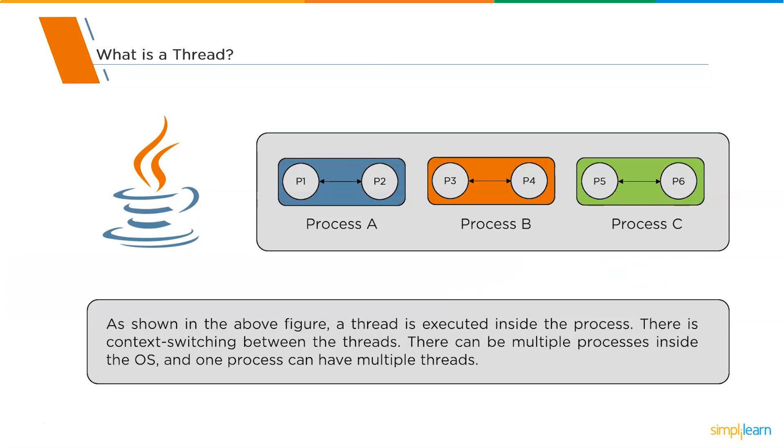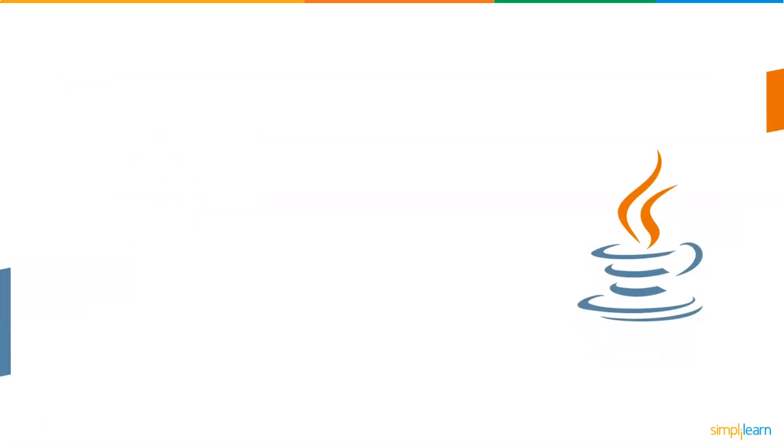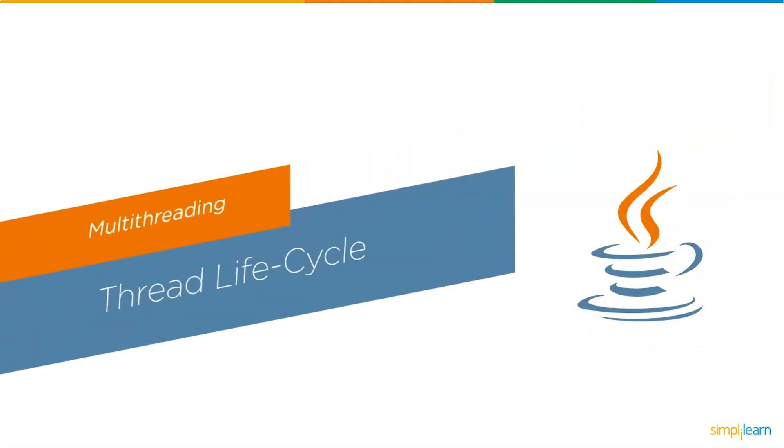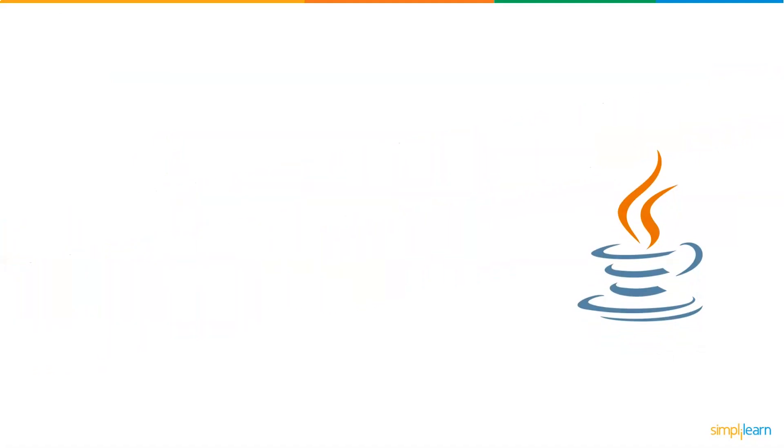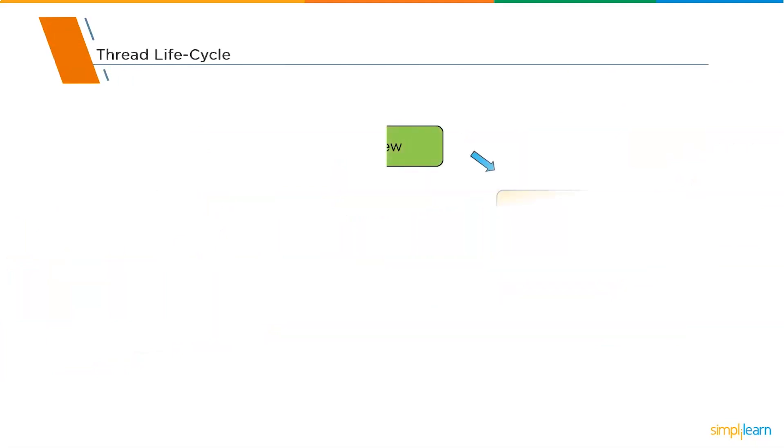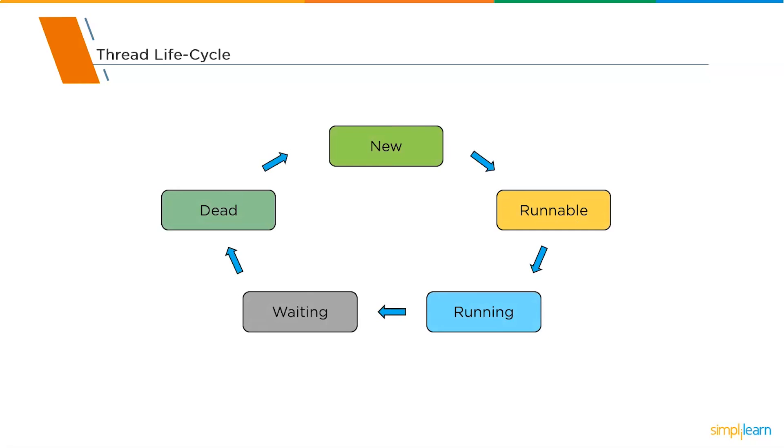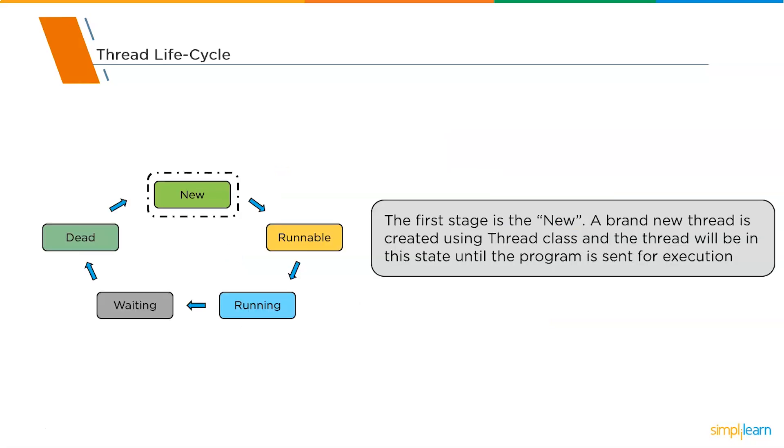Now moving forward, we will understand more about the thread life cycle. Basically, a thread life cycle is decided in five different stages. The first stage is the new. Next is runnable. After that, running. And followed by running, you either have to wait or you can also send your thread into the dead state based on the requirements of your process. Now we will discuss each one of them in a bit more detail. First, we will discuss about the new stage.